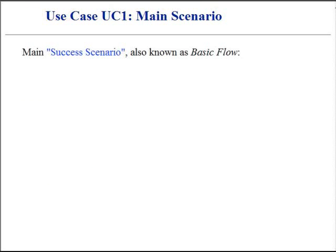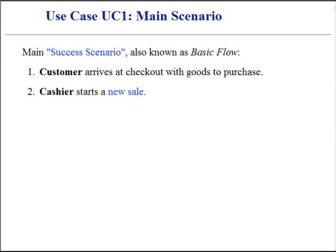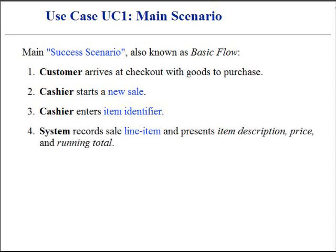The main success scenario, also known as basic flow, contains the following steps. Customer comes at checkout with goods or services to purchase. Cashier starts a new sale. Cashier enters item identifier. System records the sale line item, then presents item description, price, and running total for each item. Price is calculated from a set of price rules.